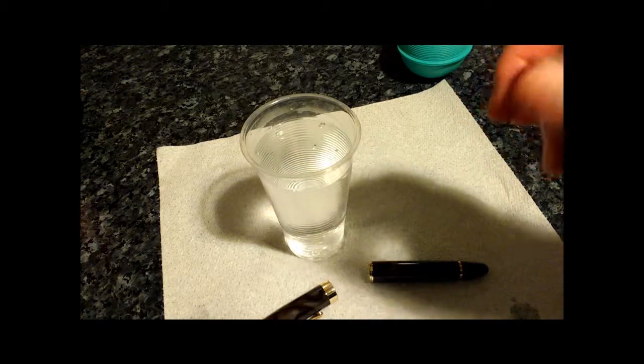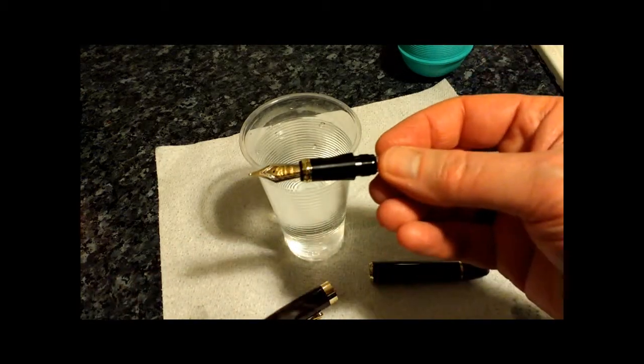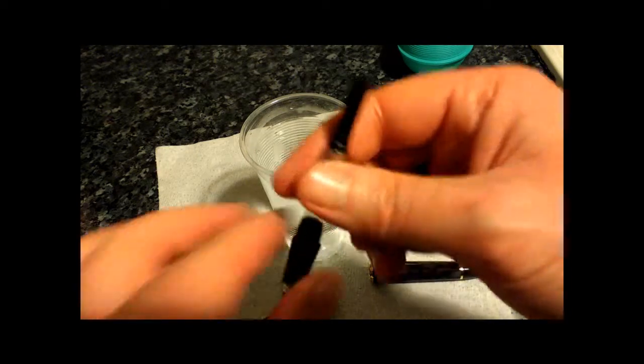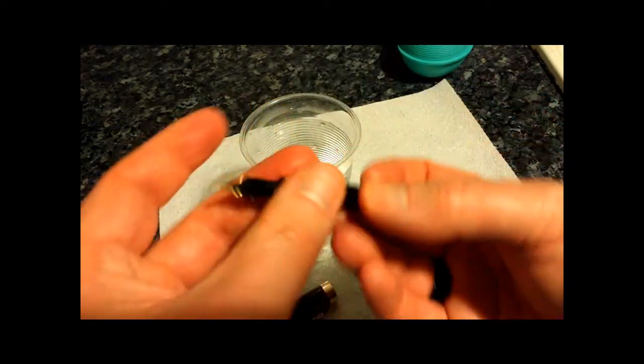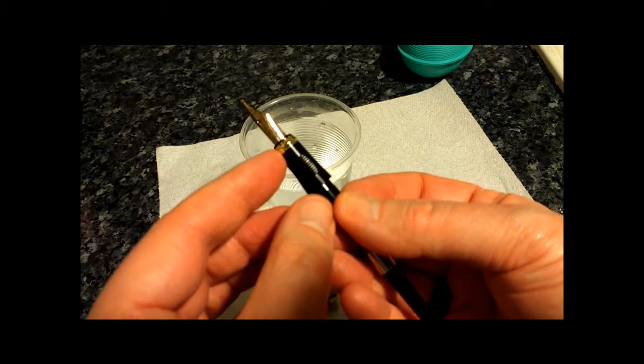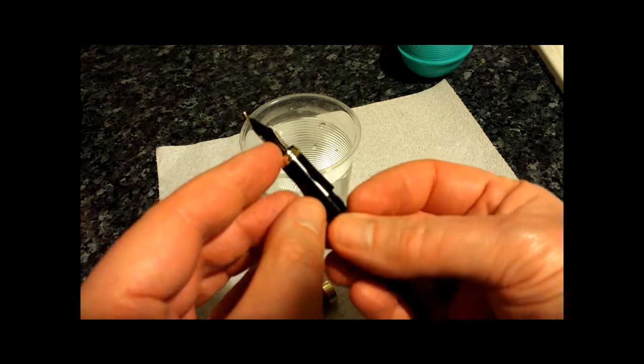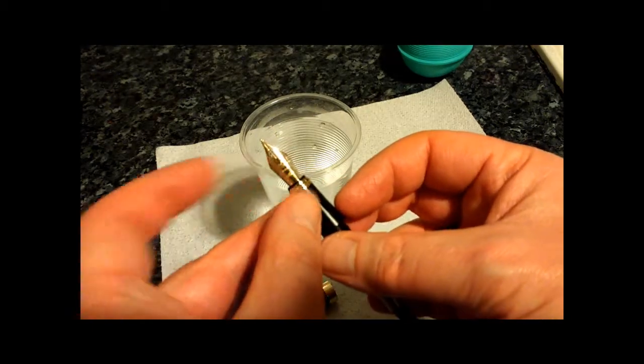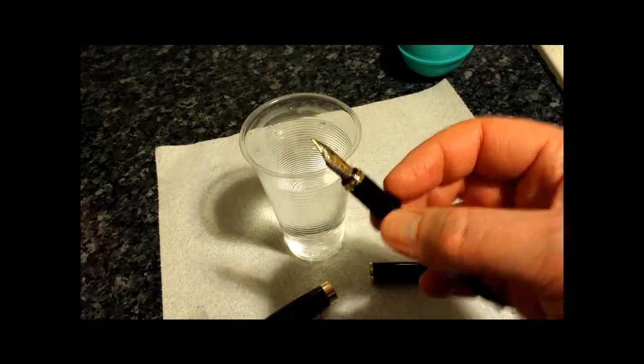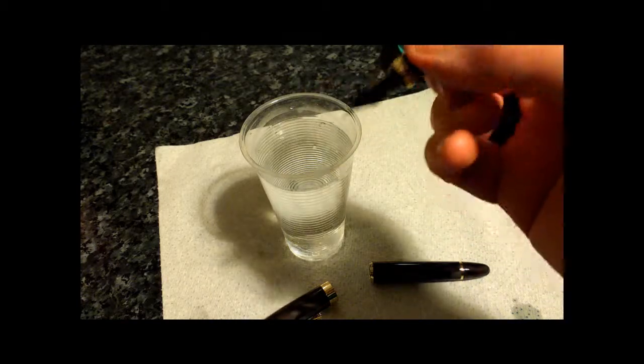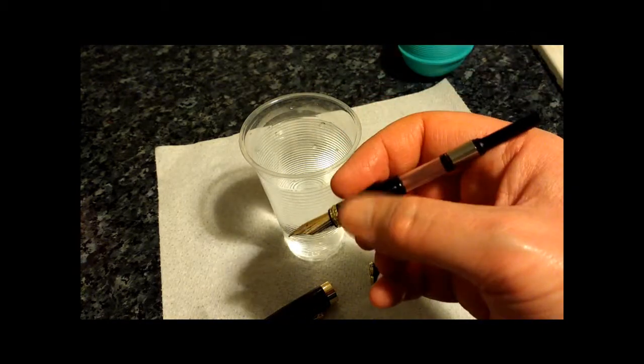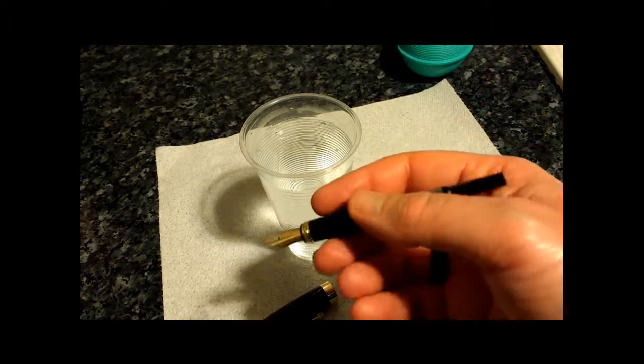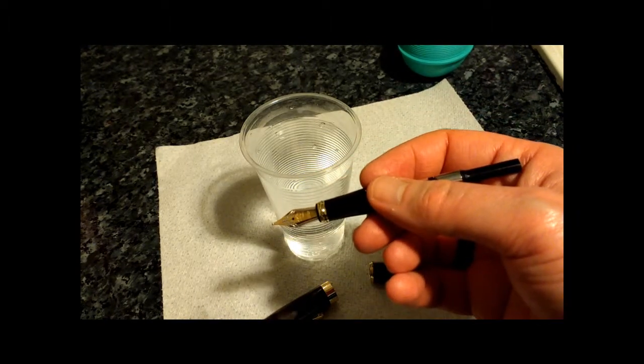And this is just to break the surface tension of any oils from the manufacturing process that may be adhering to any of the surfaces inside the converter, in the plastic there, inside the section, and the feed which is inside the pen there. You can see there you've got the plastic feed and then you've got the nib, so metal. If you put a little bit of detergent in, that can help things along. Definitely recommended, but not something that is absolutely essential if you're an absolute beginner.